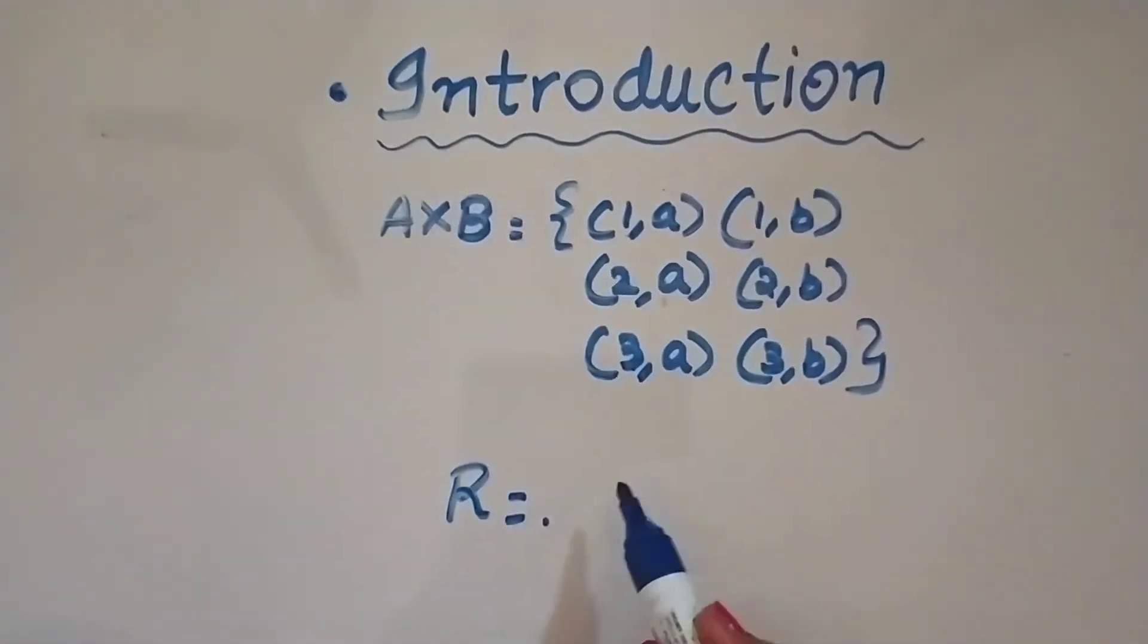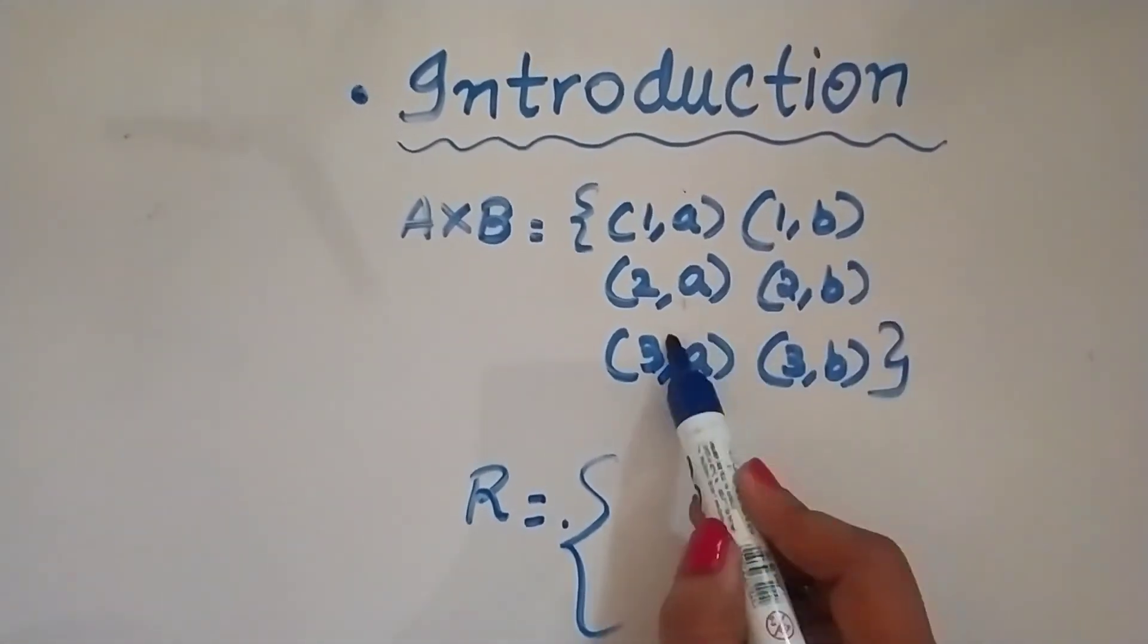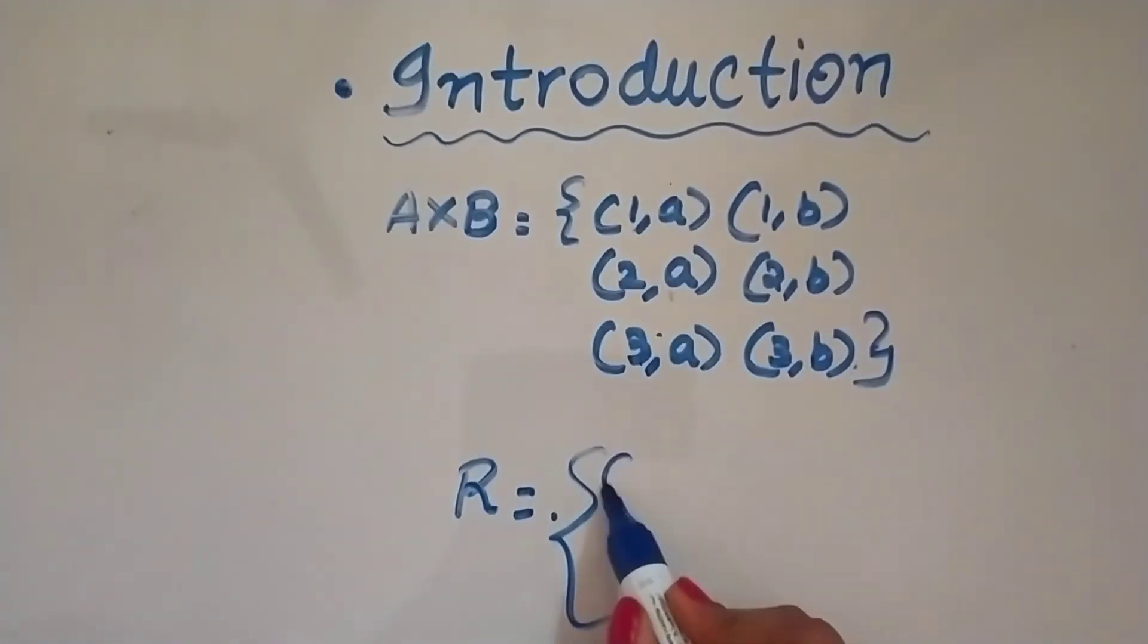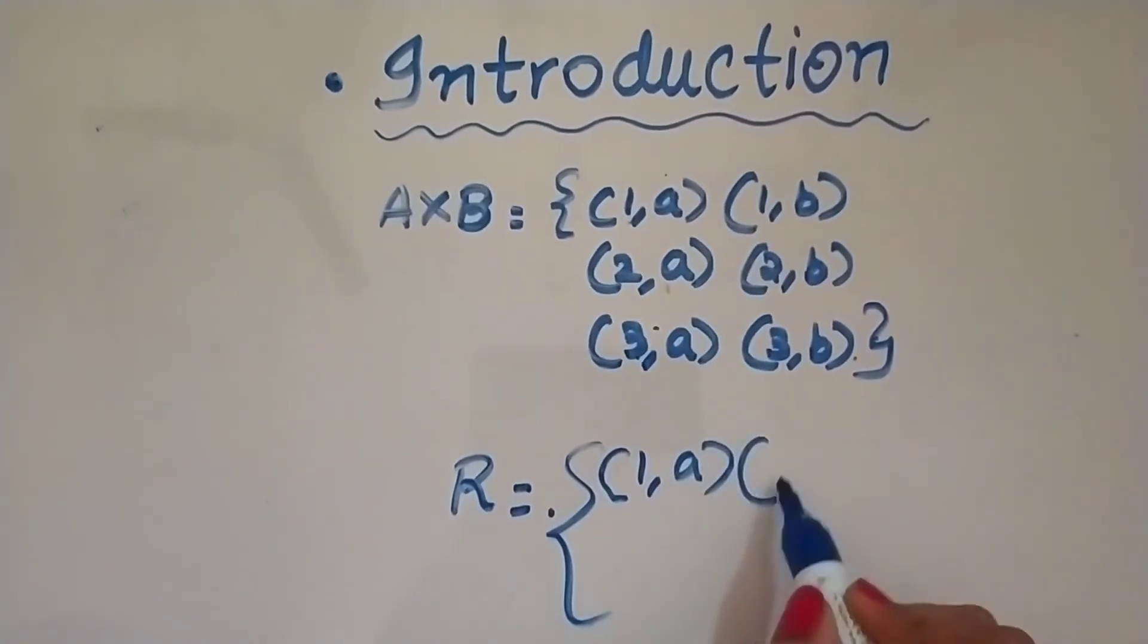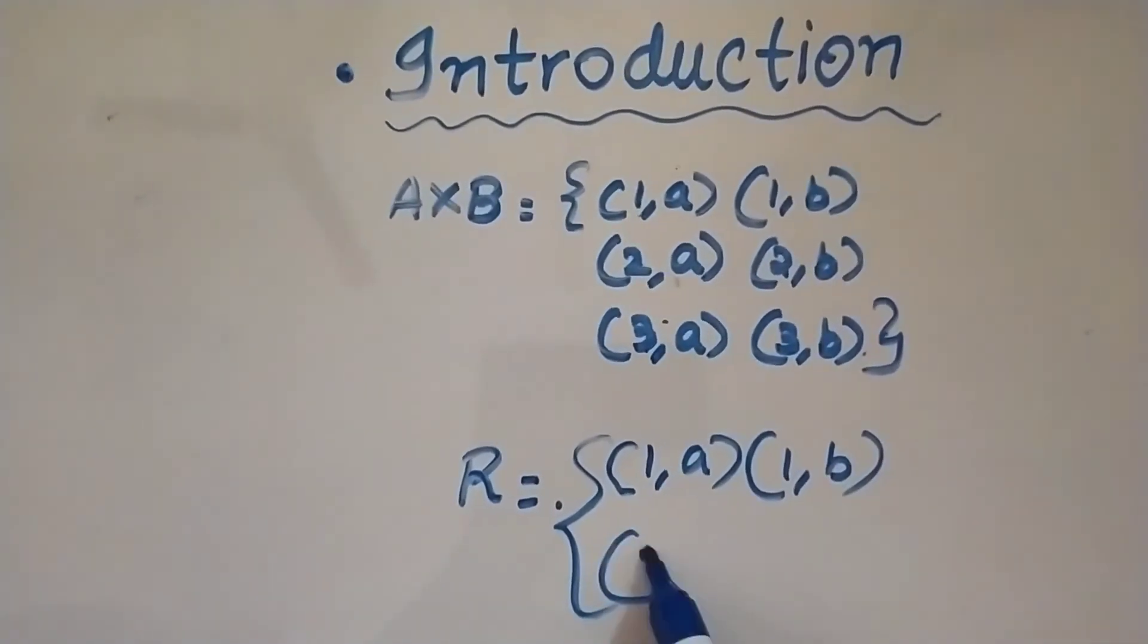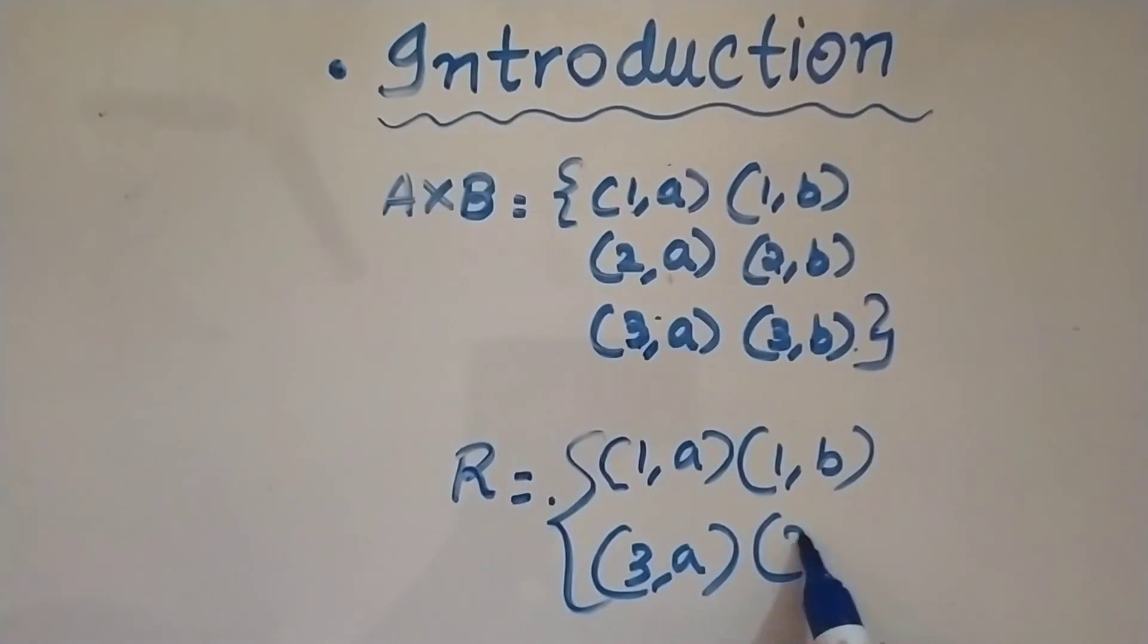So 1 and 3 are odd numbers. Hence I would take these four. So it would be (1,A), (1,B), (3,A) and (3,B).